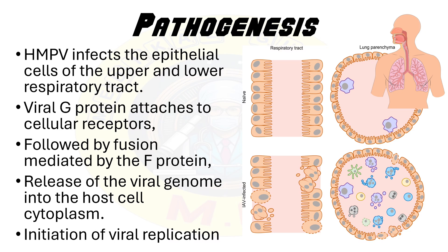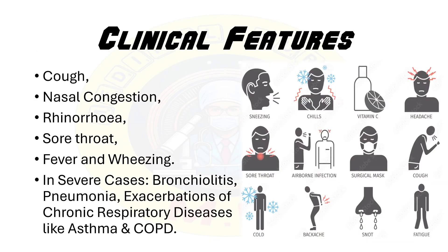The host immune response to HMPV is characterized by the recruitment of neutrophils, macrophages, and lymphocytes to the site of infection, resulting in inflammation and damage to the respiratory epithelium. This virus can also impair ciliary function, leading to mucus accumulation and increased susceptibility to secondary bacterial infections.